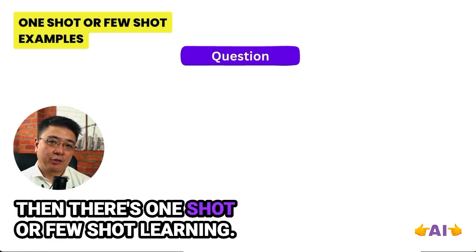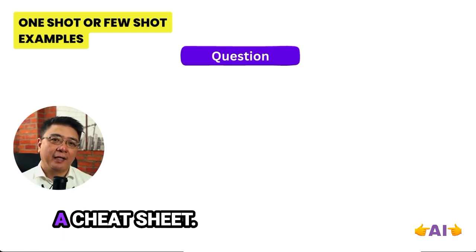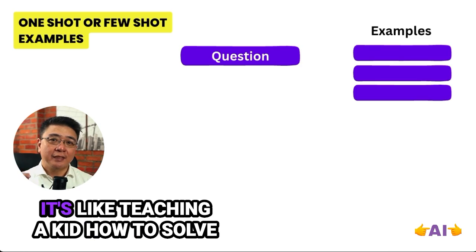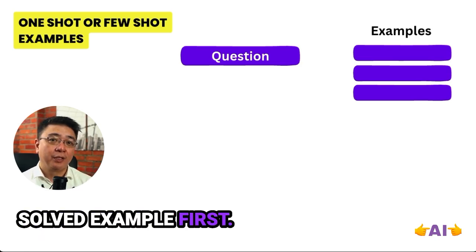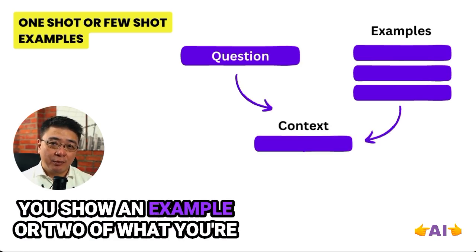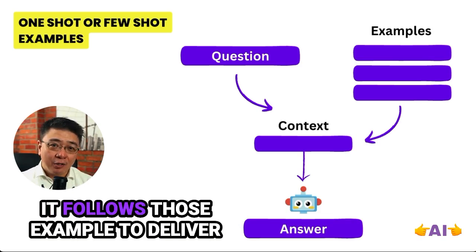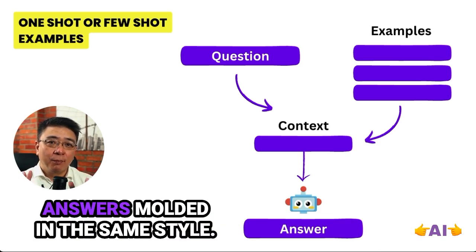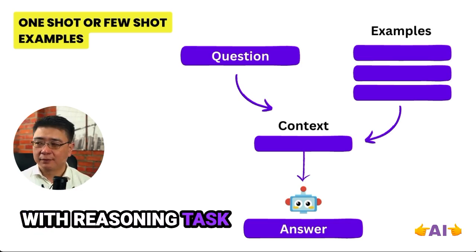Then there's one-shot or few-shot learning. This is basically like giving AI a cheat sheet — like teaching your kid how to solve a math problem by showing them a solved example first. You show an example or two of what you're looking for, and it follows those examples to deliver answers molded in the same style. This approach has been proven to work in multiple studies, especially with reasoning tasks.